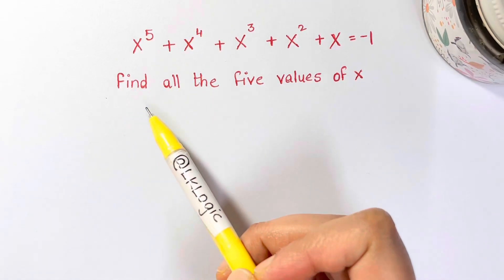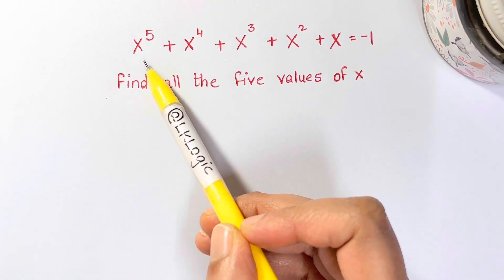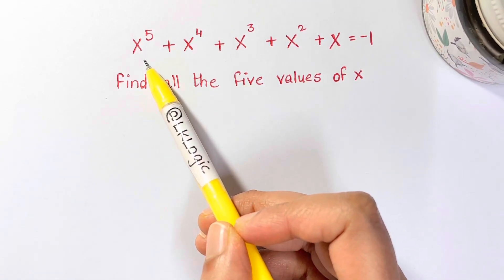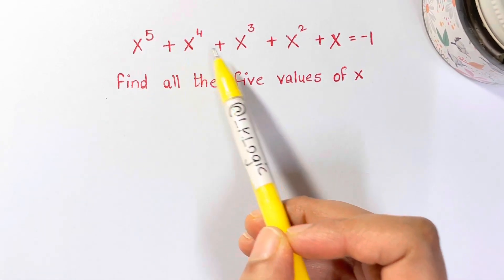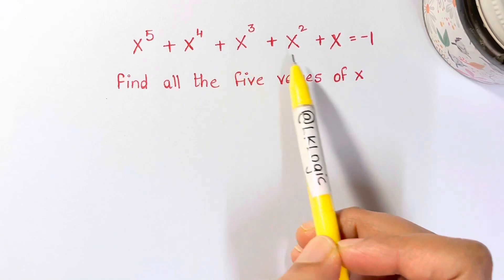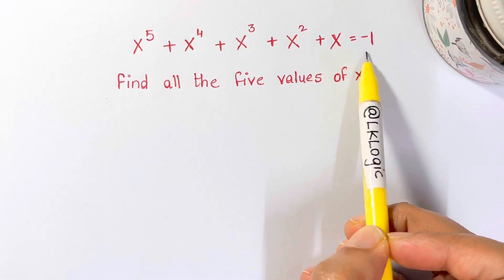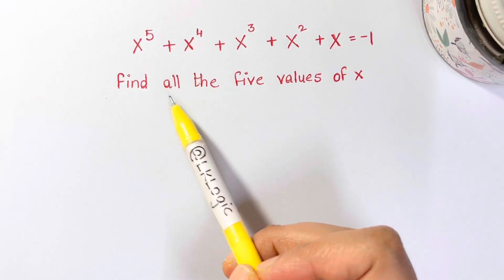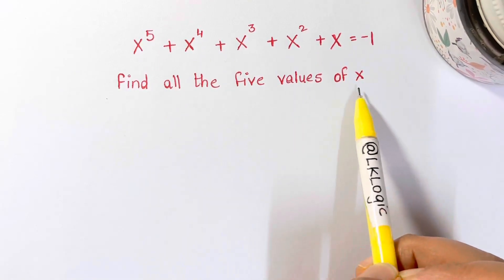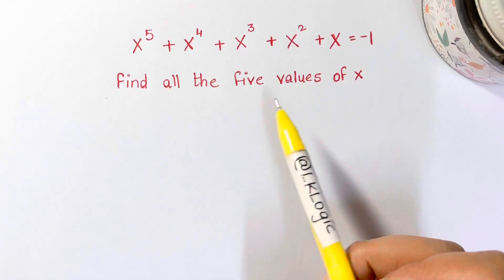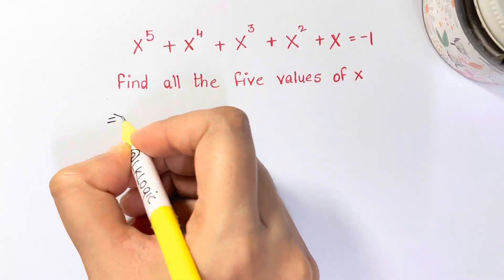Let's quickly solve this algebraic equation: x⁵ + x⁴ + x³ + x² + x = -1. Find all five values of x.